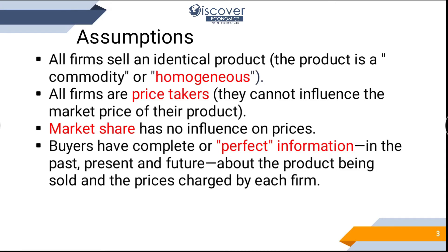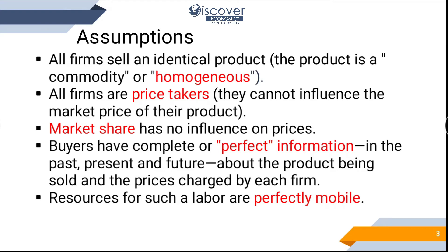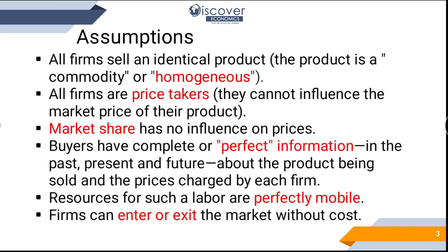Buyers already know what the price was last year, four months ago, yesterday, and today — this is why we call it perfect information. Resources such as labor are perfectly mobile, meaning you can go anywhere and do the work without restriction. Firms can also freely enter or exit the market — if you grew wheat this year, next year you can grow something else without restriction by any market agent.